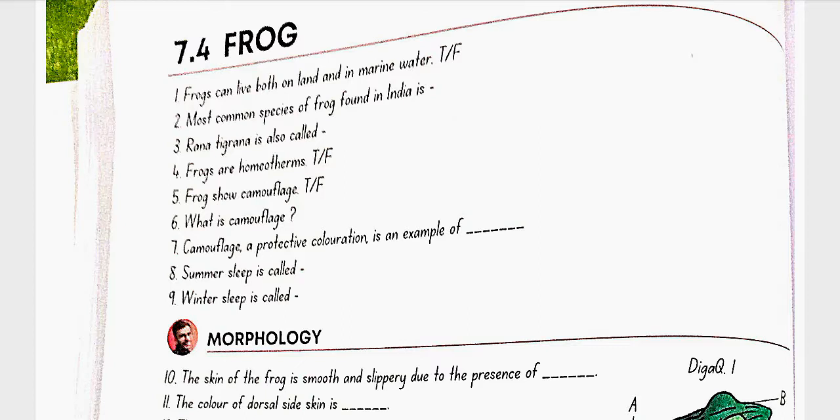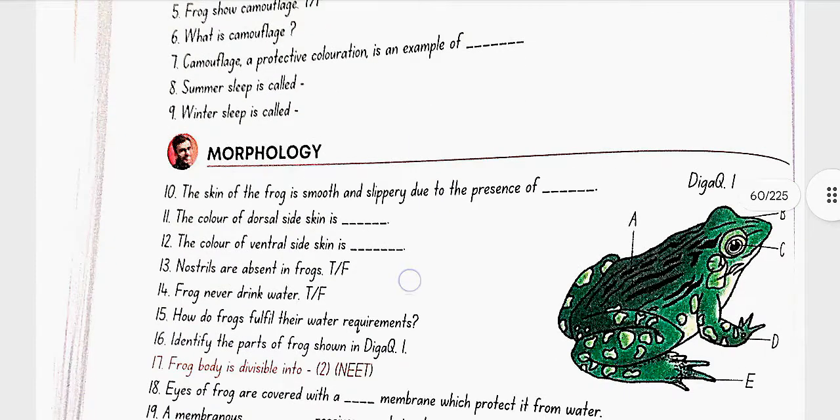Frogs are homeotherms. No, false. Frogs show camouflage. Yes, true. What is camouflage? Camouflage is the ability to change the color to hide themselves from the enemies. Camouflage, a protective coloration, is an example of mimicry. Summer sleep is called estivation. Winter sleep is called hibernation.